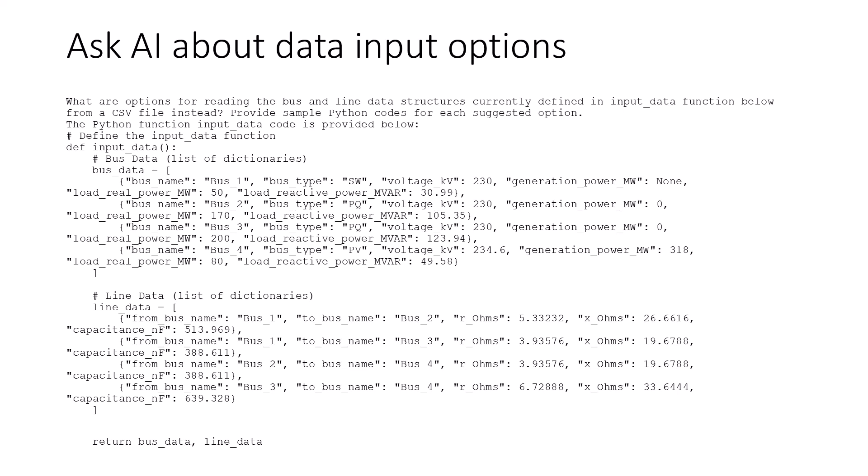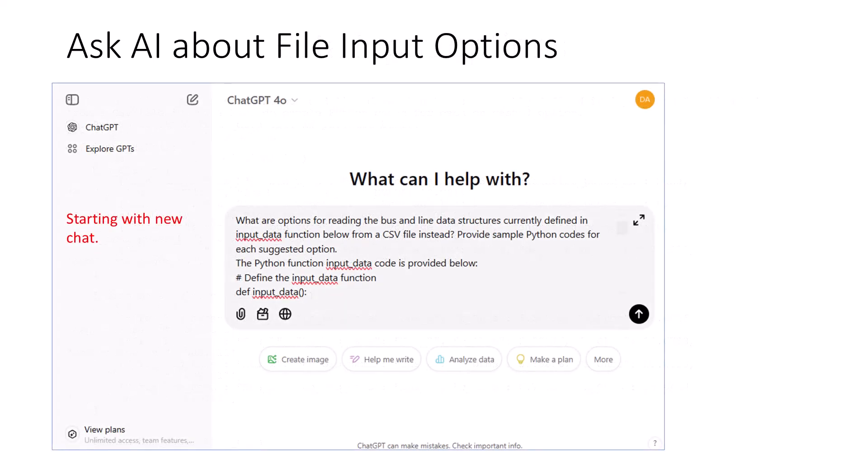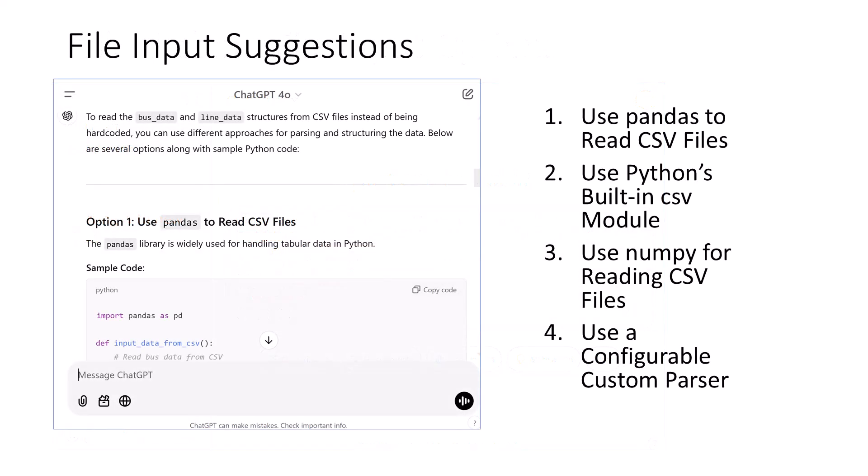If one is not familiar with how to read data from a file system using Python, it is possible to ask the Generative AI tool for options. This shows a query I have constructed for reading data in CSV format. CSV stands for Comma Separated Variable, which is a compatible file format editable in most spreadsheet programs. In this example, I use ChatGPT as my generative AI tool, then proceed by inserting the query into the browser interface as shown. ChatGPT suggests four possible options for inputting file data, with example codes for each option. I will utilize the Python built-in CSV option for the sake of simplicity.